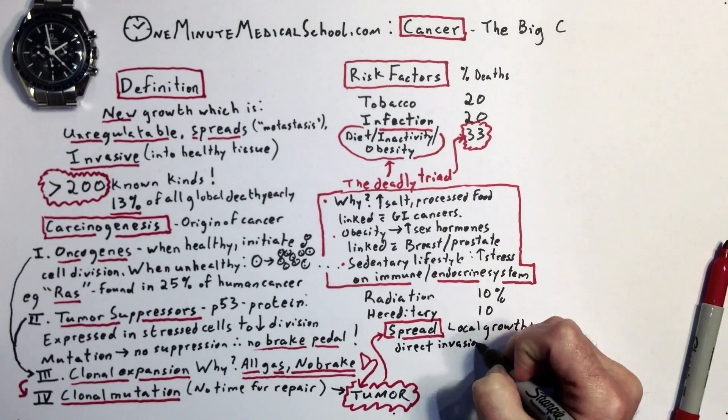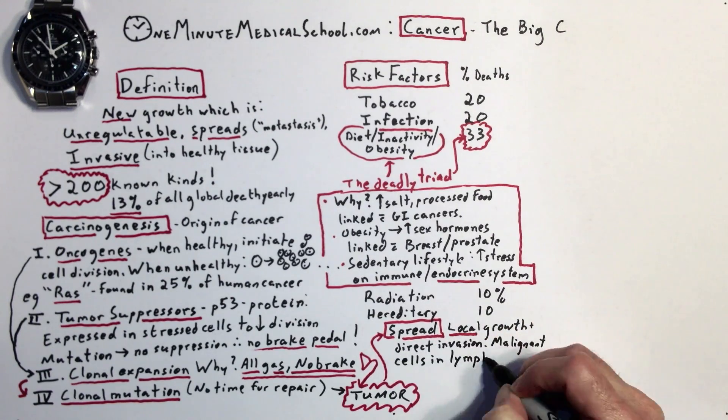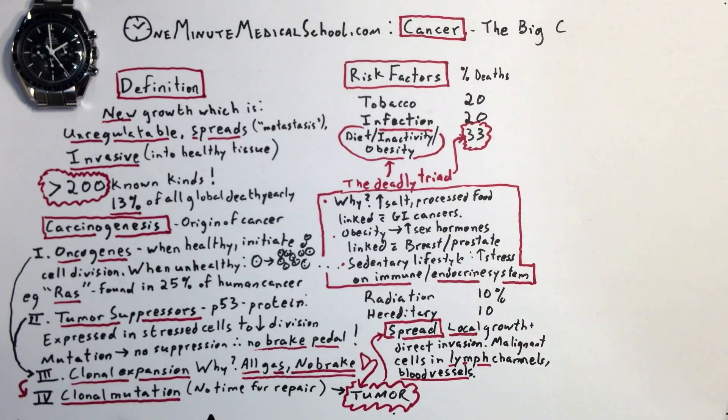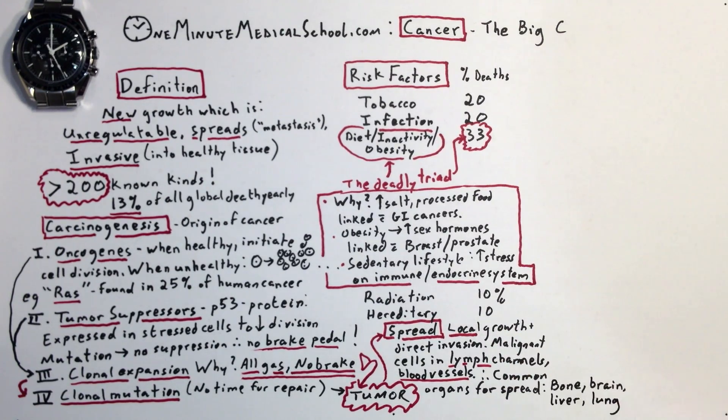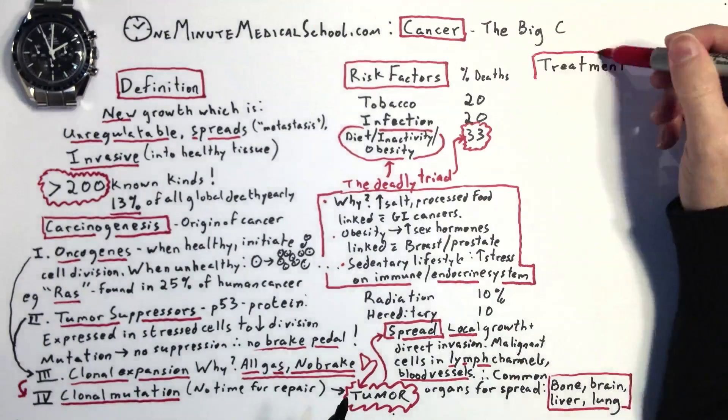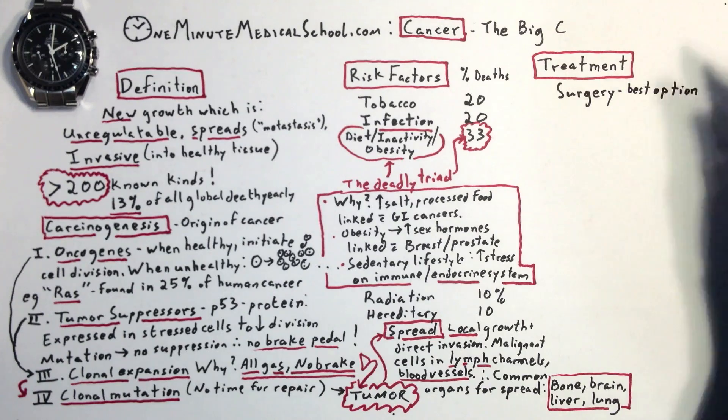Spread is by local growth, by invasion in lymphatic channels or blood vessels. Bone, brain, liver and lung are common sites for metastasis.